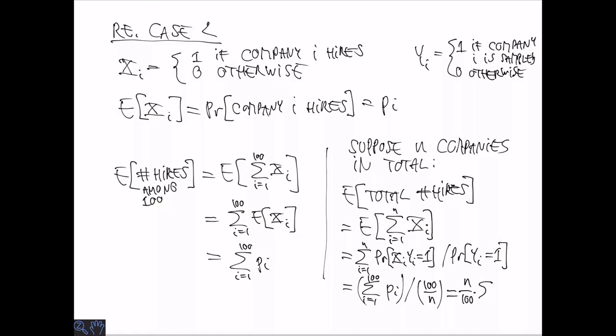This is again the sum of pi's from before divided by the sampling probability, which is 100 over n. Or in other words, we have to multiply by the inverse of the sampling rate. Though this works in the sense of having the right expectation, we are going to see later that it can be improved by using so-called weighted sampling.